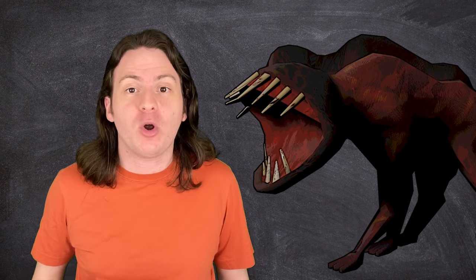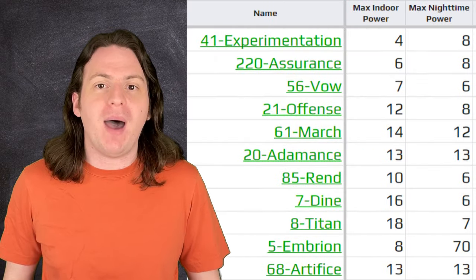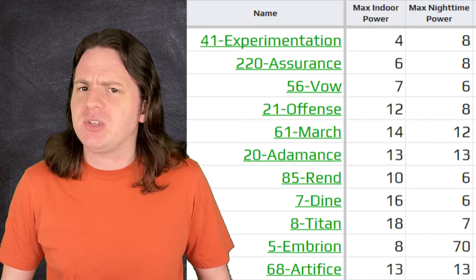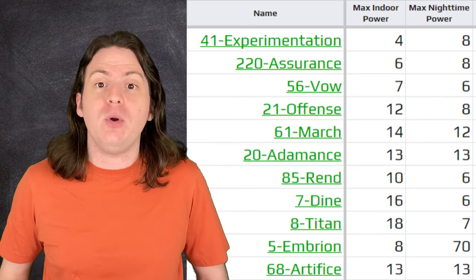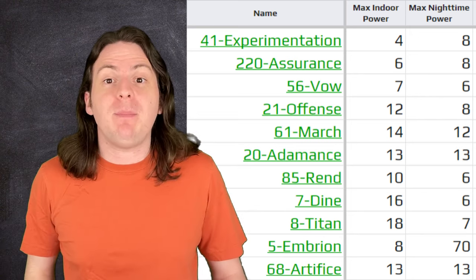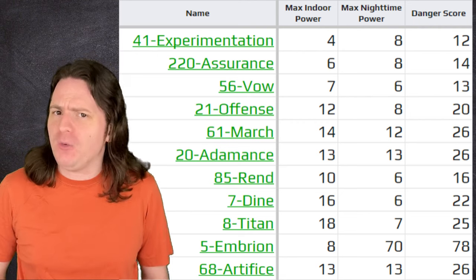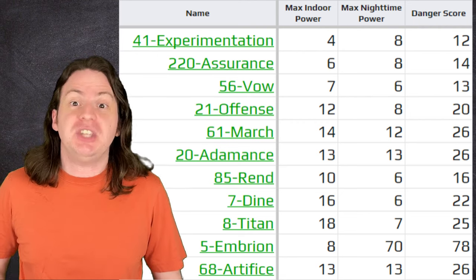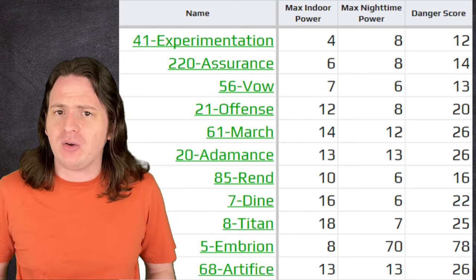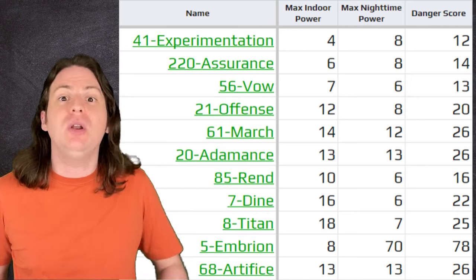Objectively, quantifying a moon's difficulty is tricky, because it's largely subjective. Some people may think that the eyeless dogs are a piece of cake to avoid, while mechanical keyboard users find them impossible. To try to keep this as objective as I can, and not rank every single moon that has birds in automatic 10, I decided to use each moon's power value. Power is a measure of the number of monsters that can spawn on a given map. Certain monster types are worth different amounts of power, but by and large, the more power a moon has, the more stuff is going to try to kill you. Each moon has a power rating for indoor monsters and outdoor monsters, so to get a final score, I just added them together.